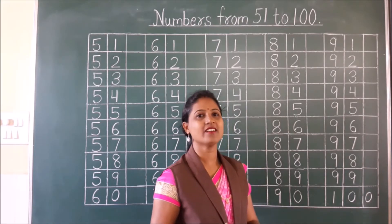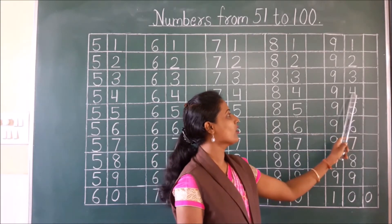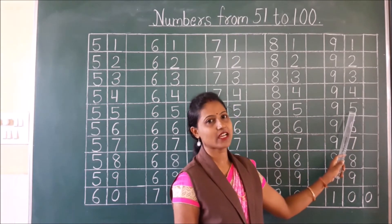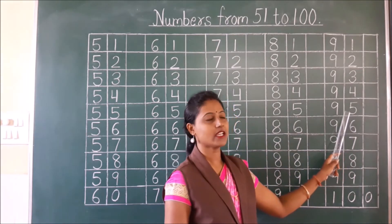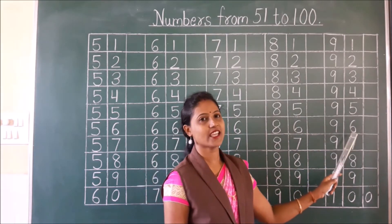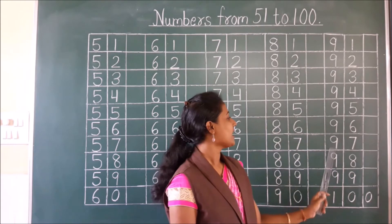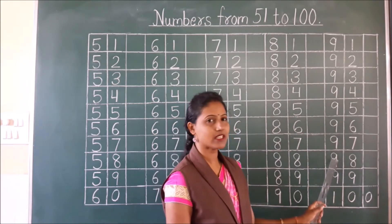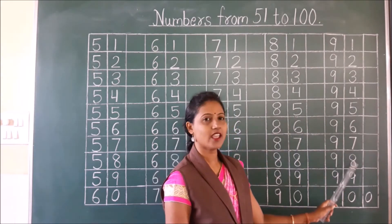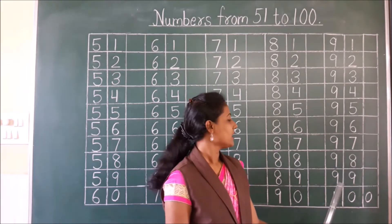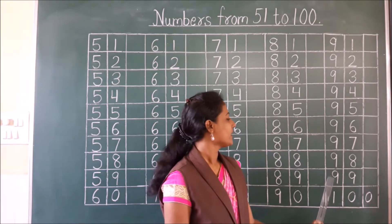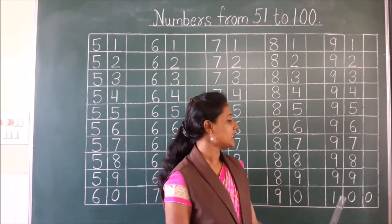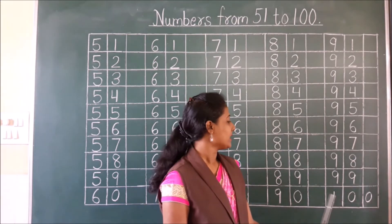I hope you all are repeating with me. 94, 95, 96, 97. Then what will come children? 98, 99. Till 99 we have 2-digit numbers, and after 99 we start with a 3-digit number.